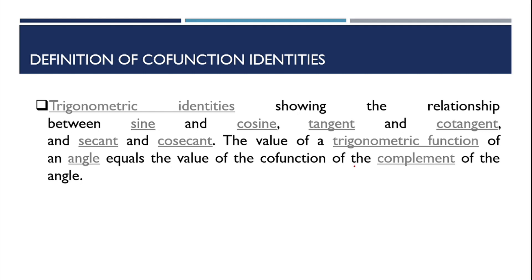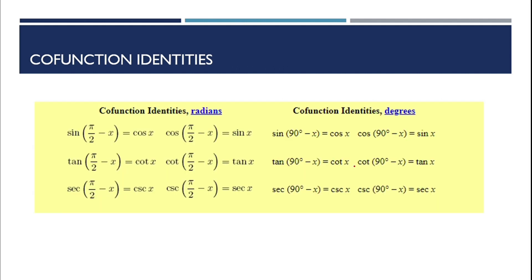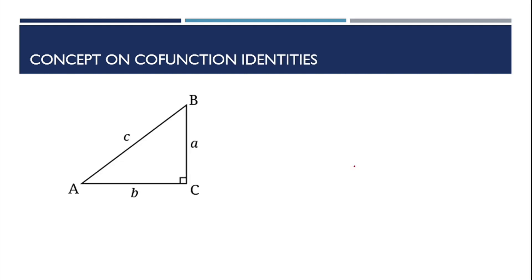Let us have the cofunction identities. These are the cofunction identities in radians and degrees. Take note that sine of 90 degrees minus x is equal to cosine x, and cosine of 90 degrees minus x is equal to sine x. Note that pi over 2 is equal to 90 degrees. Those are the cofunction identities when it comes to radians and degrees.